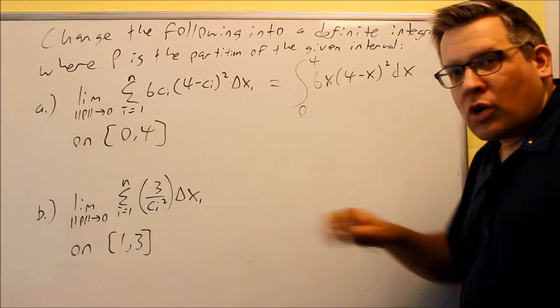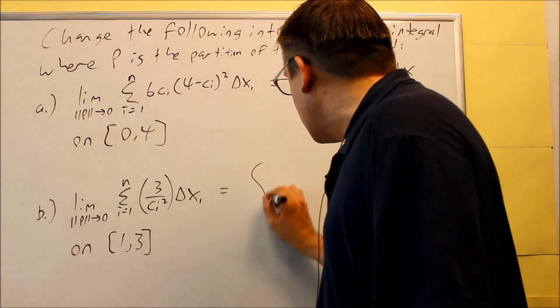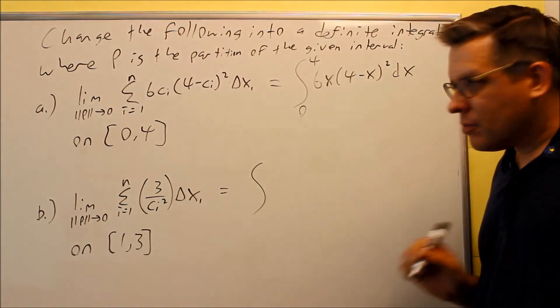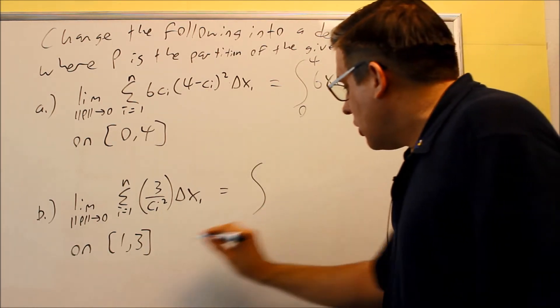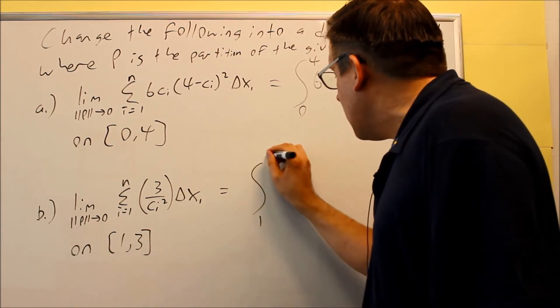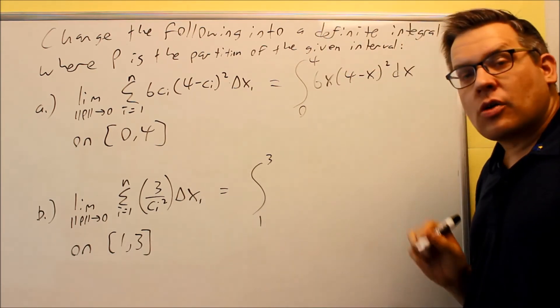Let's do this one, convert that one over. Okay, so again we got the integral symbol there, takes care of the limit and the summation notation. a, the first number in the interval is always a, that goes on the bottom. The b goes on top.